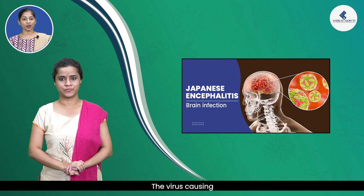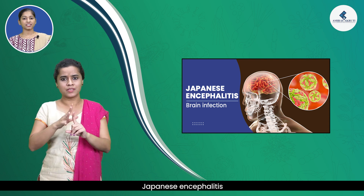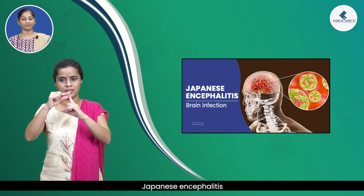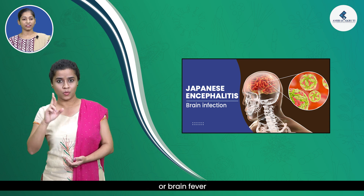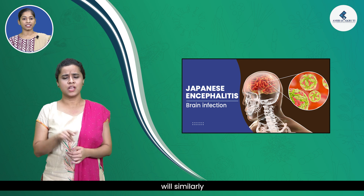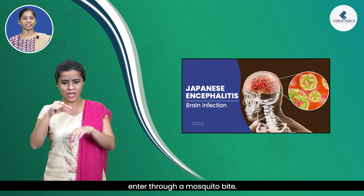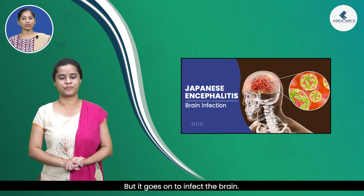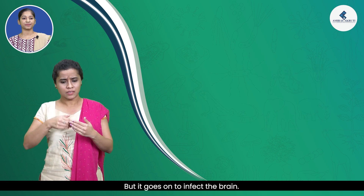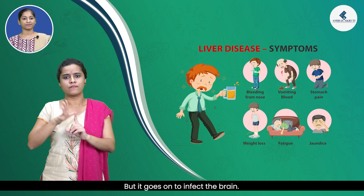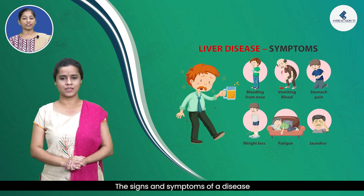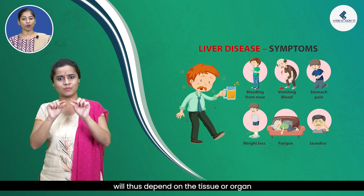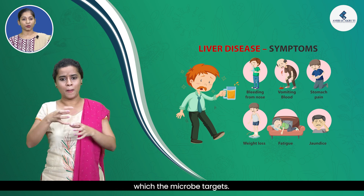The virus causing Japanese encephalitis, or brain fever, will similarly enter through a mosquito bite but goes on to infect the brain. The signs and symptoms of a disease will thus depend on the tissue or organ which the microbe targets.